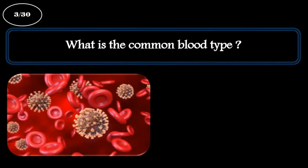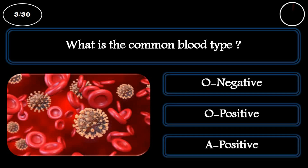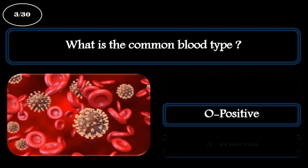Question 3. What is the most common blood type? A: O negative. B: O positive. C: A positive. The correct answer is O positive.